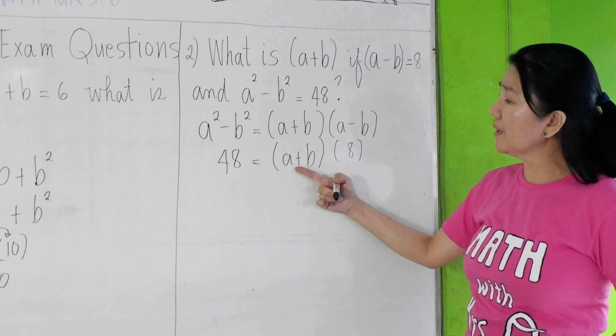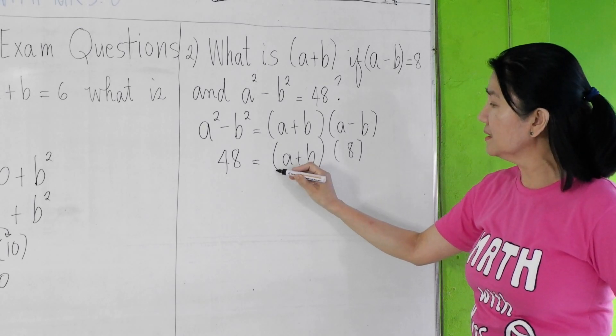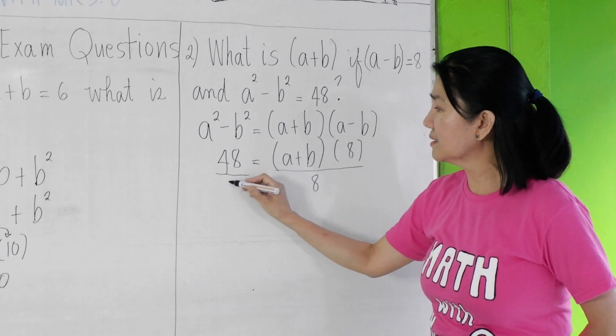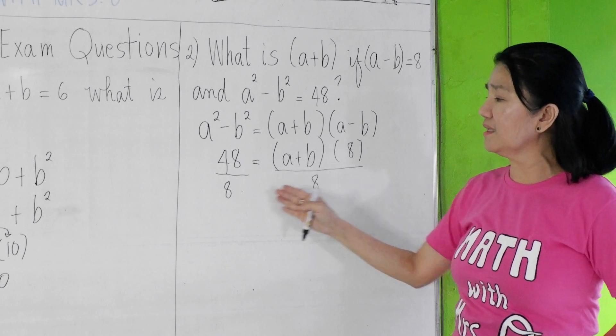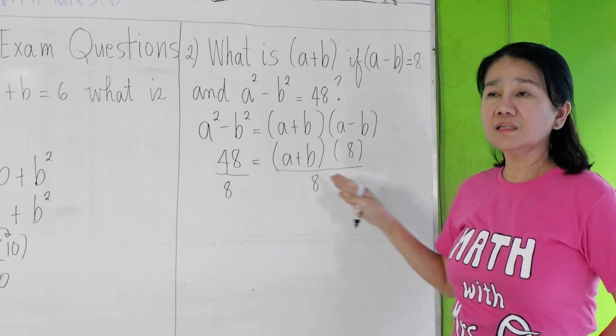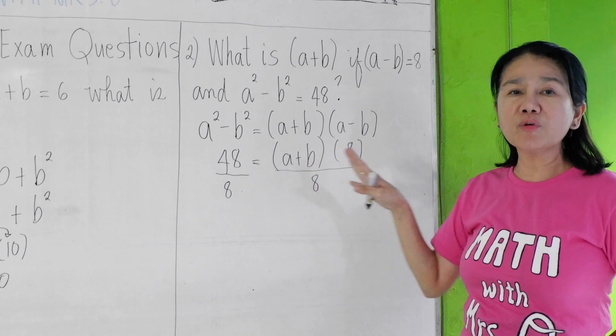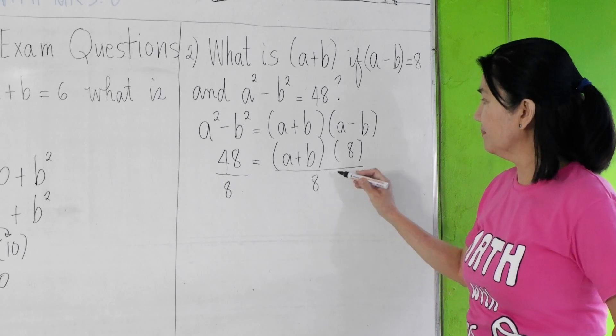How do we isolate a+b? We simply divide 8 to both sides. Remember that when we are dividing 8 to both sides, it is the same as multiplying 1/8 to both sides by the multiplication property of equality.